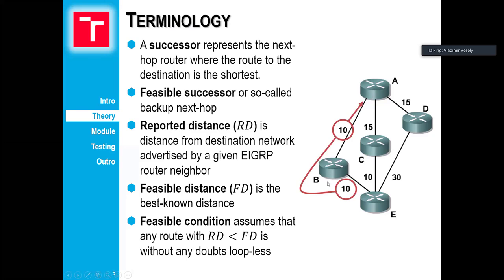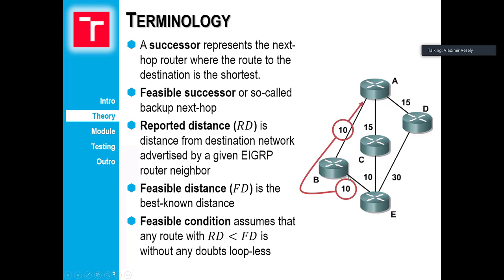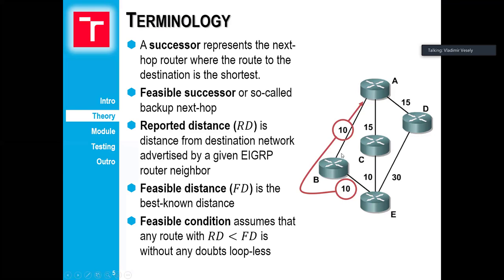So, B, C, and D tell router A that there exists a route towards router E. In our scenario, reported distance from router B to router E is 10, and reported distance from router D towards router E is 30. When we take this reported distance and add the distance from our router to its direct neighbor, we get the feasible distance. Feasible distance is the sum of reported distance and the distance to our neighbor — in this case, the feasible distance would be 20, as a metric from router A to router E through router B.